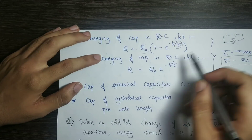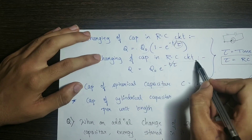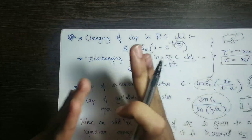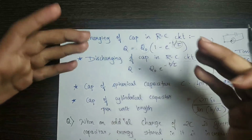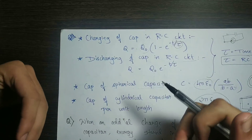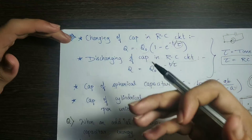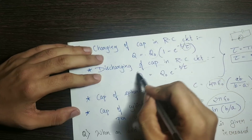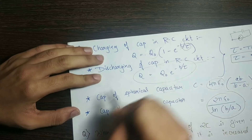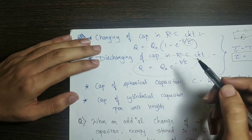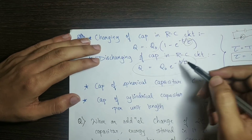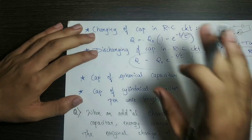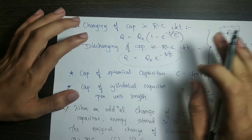Next is the discharging of capacitors in RC circuits. If you connect the capacitor to a resistor, it dissipates power across the resistor. To discharge, Q equals Q₀ times e^(−t/τ).